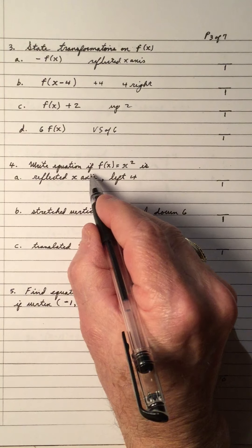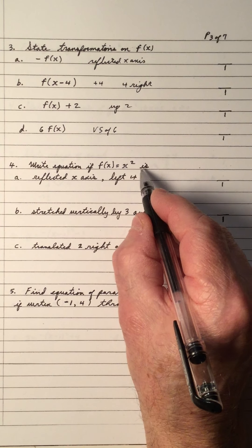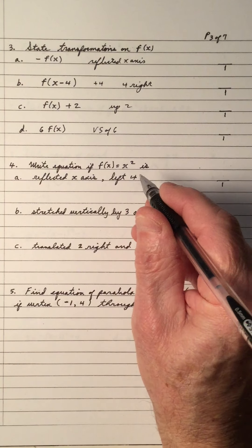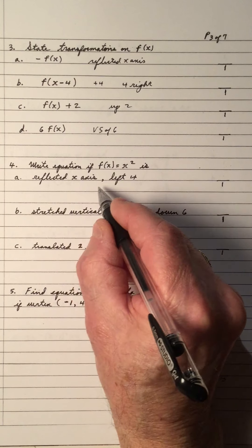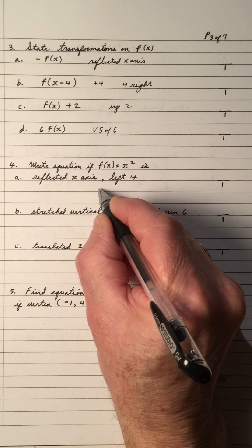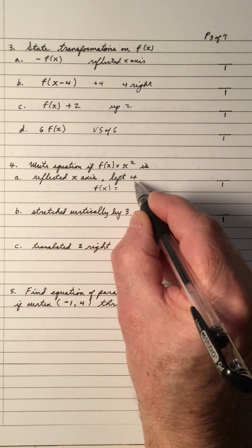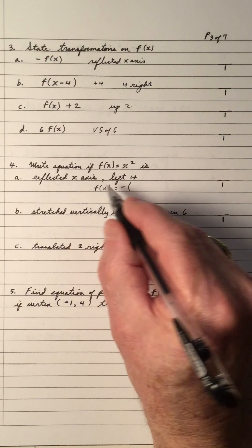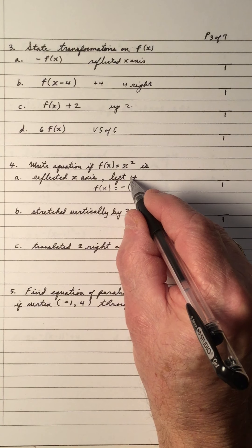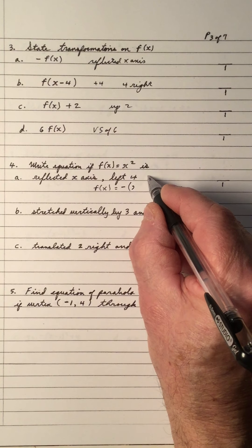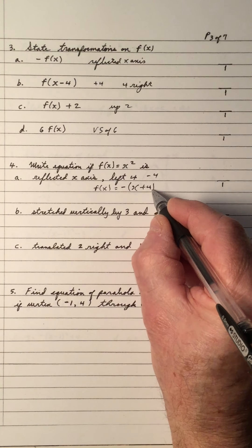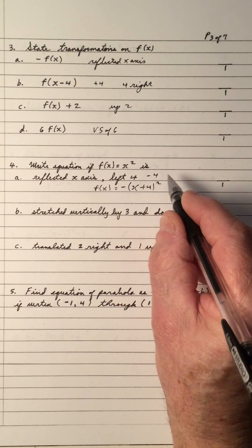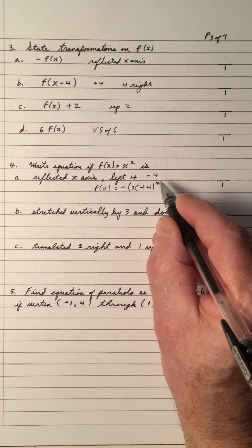Number 4: write the equation if f(x) equals x squared is reflected in the x-axis — the equation gets a negative outside. If reflected and shifted left 4 (horizontal, left means negative 4), the equation gets a plus 4 inside, giving f(x) equals negative (x plus 4) squared. Give yourself a mark if you got this equation right.